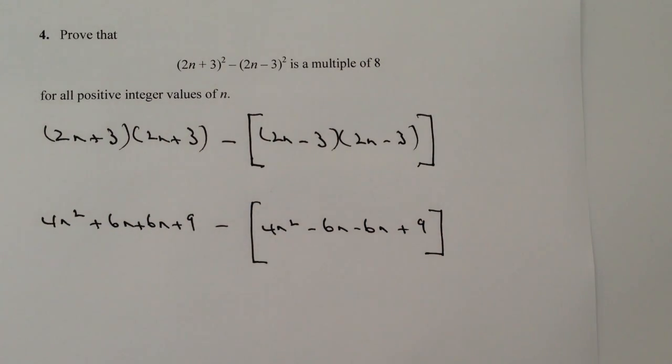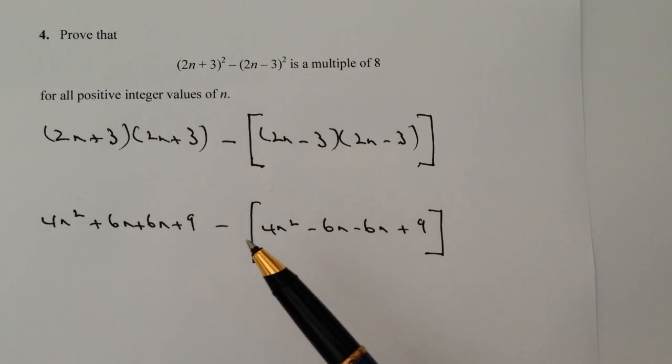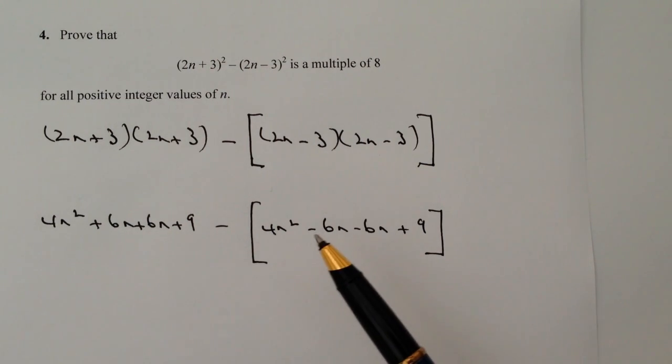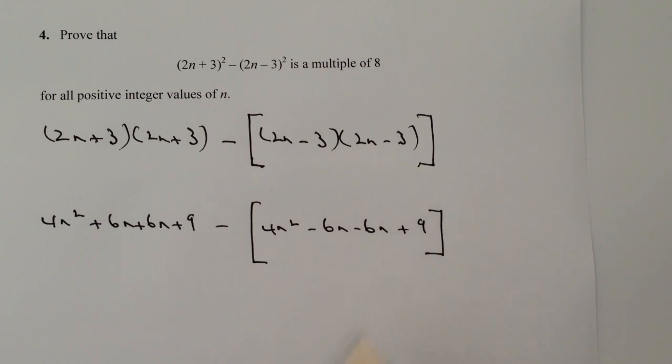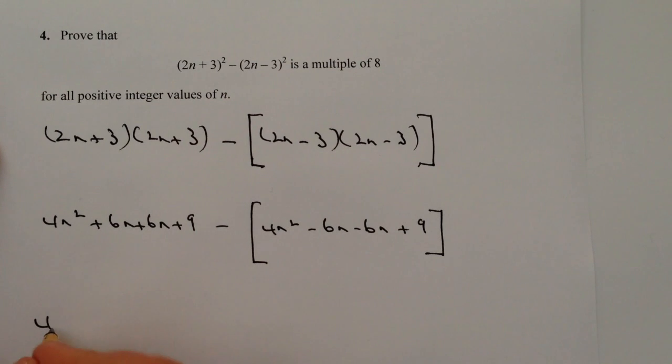Now this is the bit where you've got to be very careful because we're going to remove this square bracket, and that's going to have an effect on the minus here and the minus here and the plus here. So let's just clear that up a little bit. So I've got 4n squared plus 12n plus 9 minus 4n squared minus 12n plus 9.